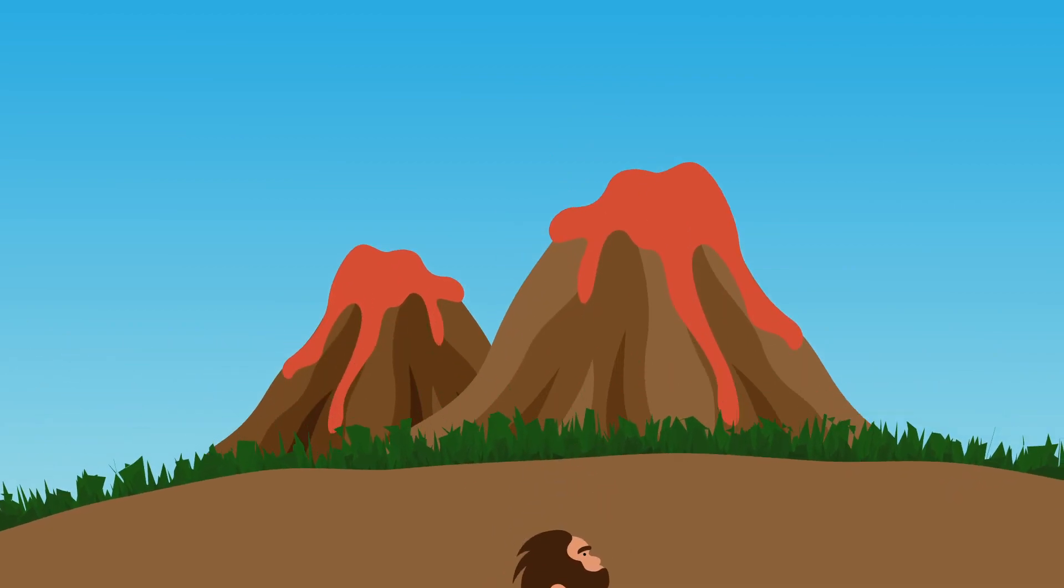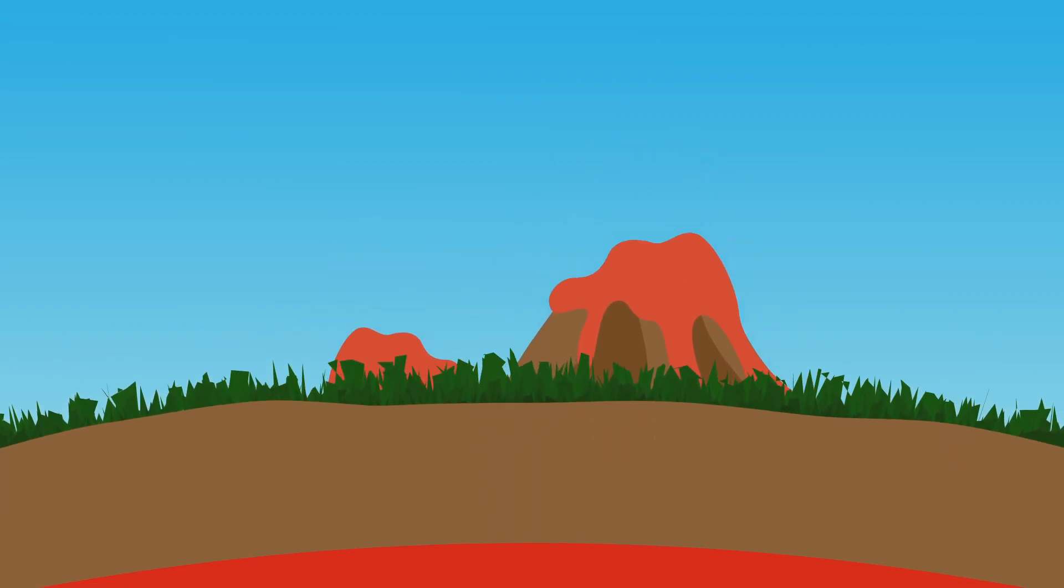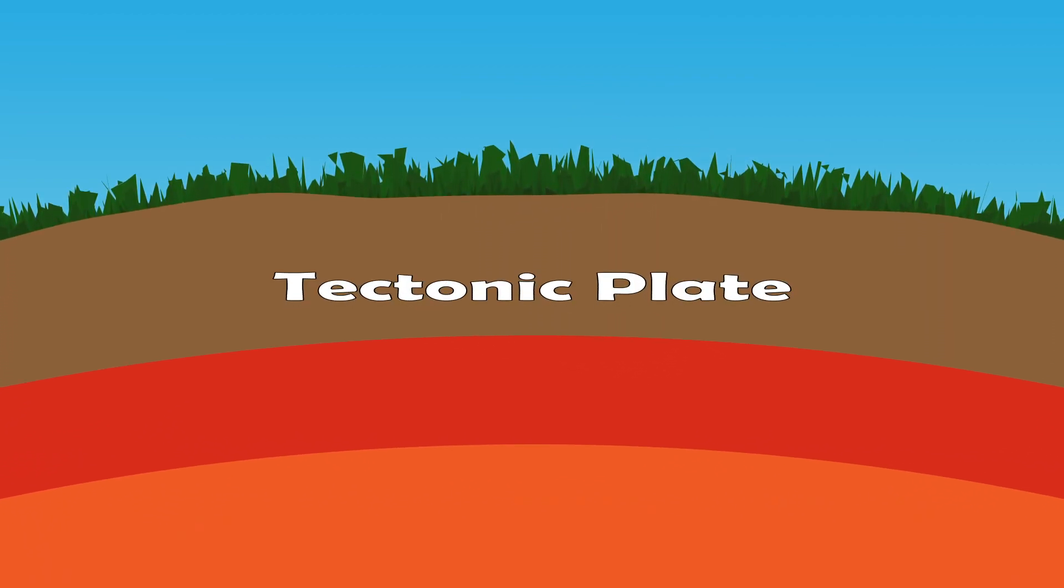Earthquakes, volcanoes—these natural events are the result of the shifting of the tectonic plates of the Earth, similar to those that led to the separation of Pangea. While we might think the ground under our feet is solid, deep under the land and water, our Earth is made up of plates that are constantly shifting and colliding.